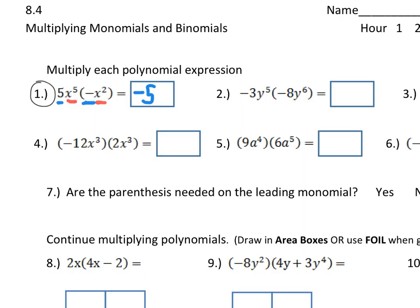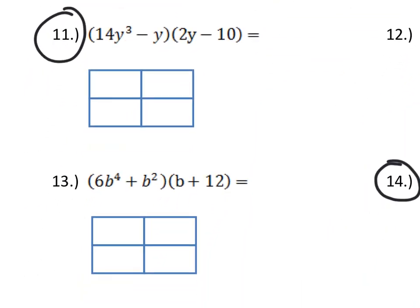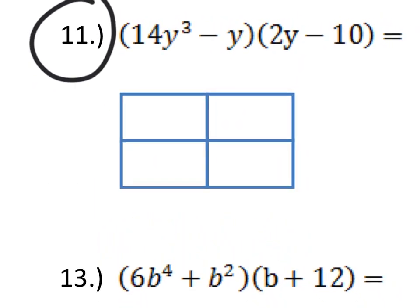That's 5 times negative 1. 5 times negative 1 is negative 5, and then x to the 5th times x squared. If you think back to when we did our exponent rules a couple weeks ago, when you're multiplying like terms, you add their exponents. So, x to the 5th times x squared is x to the 7th power. So 5x to the 5th times negative x squared is negative 5x to the 7th.